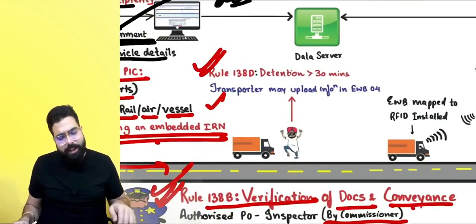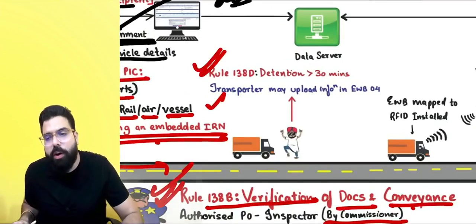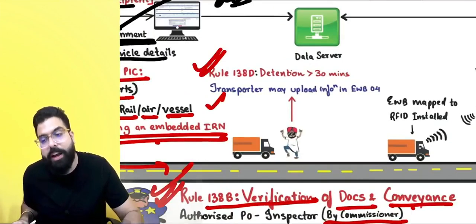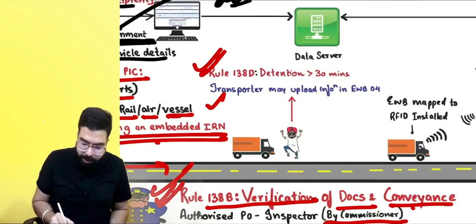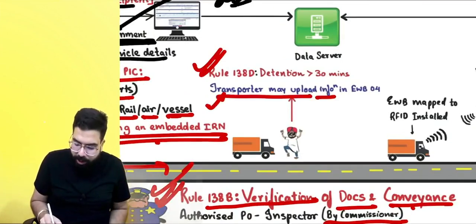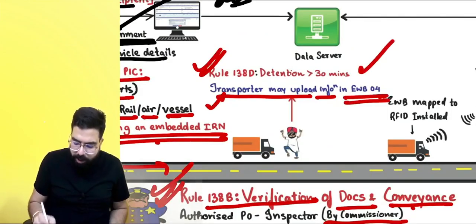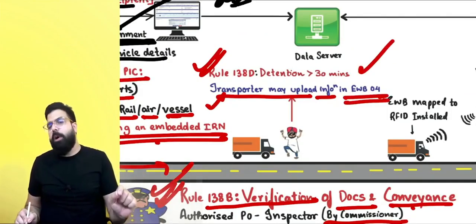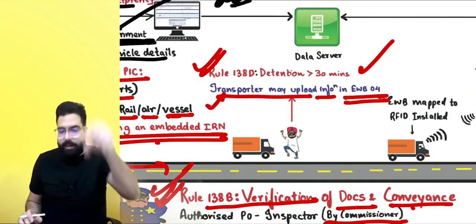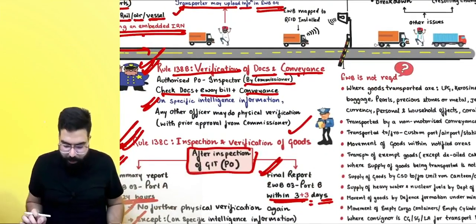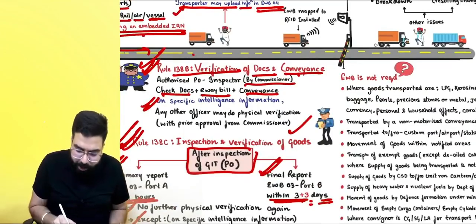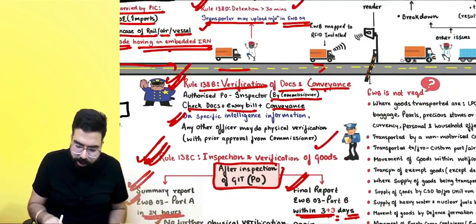Rule 138D: if you are being stopped for more than 30 minutes, you can go online and upload a grievance report. The transporter may upload information in EWB-04 if being stopped for more than 30 minutes.